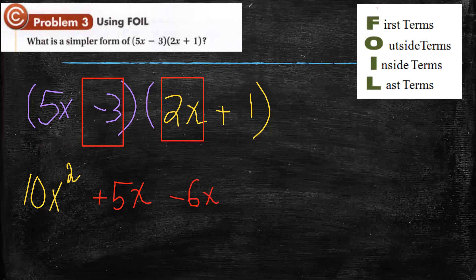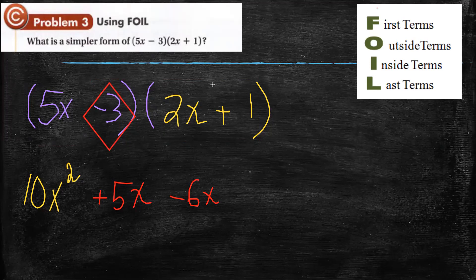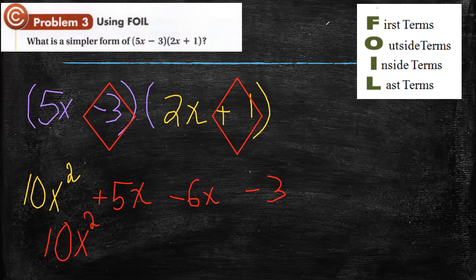What is the meaning of the last terms? The last term in the first binomial and the last term in the second binomial — negative 3 times 1, which is negative 3. This is the third way, called the FOIL method. Then we simplify: 10x squared plus 5x minus 6x minus 3, which equals 10x squared minus x minus 3.